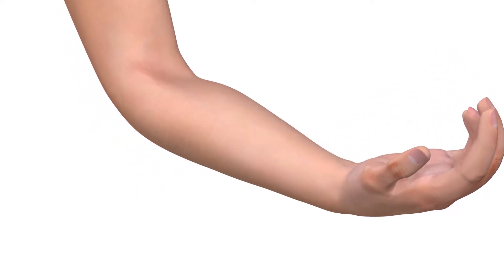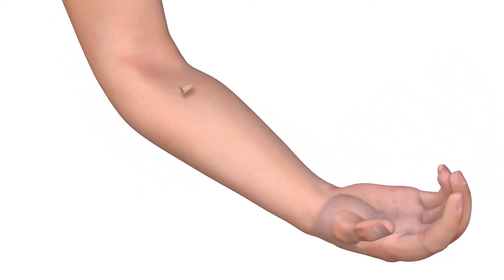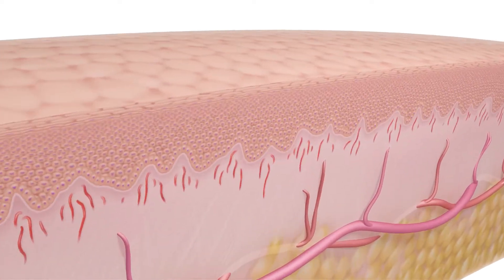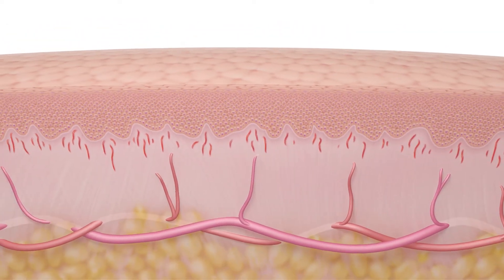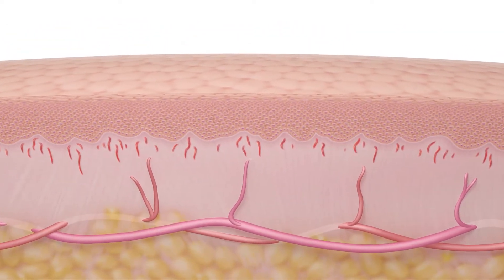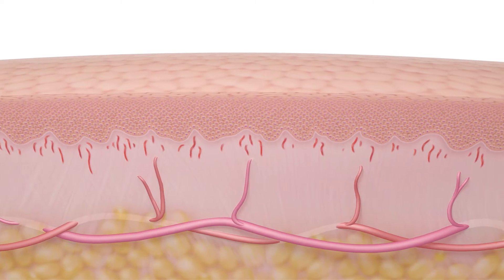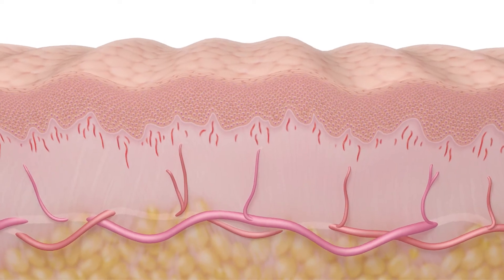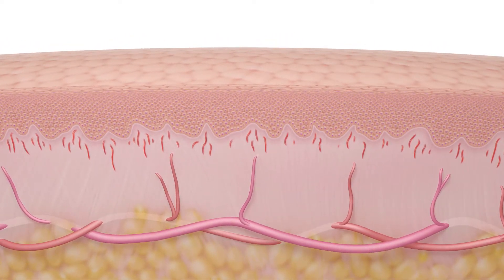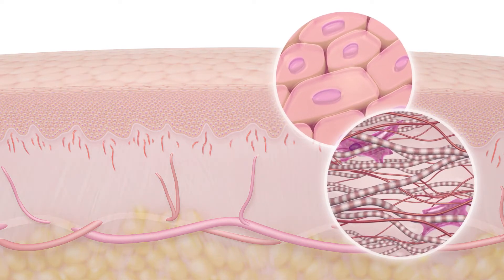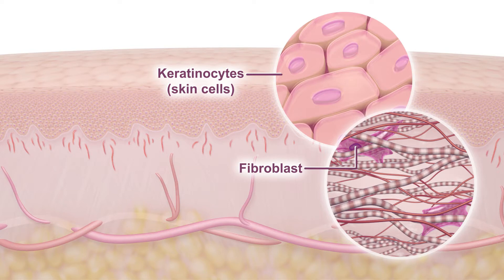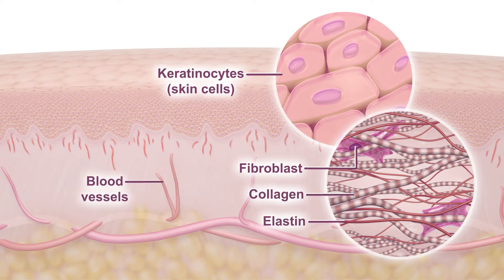Skin in its natural state is always under functional tension. Its viscoelastic properties allow it to react dynamically to movement and pressure. Microscopically, skin is a dynamic system including keratinocytes, fibroblasts, structural components including collagen and elastin, and blood vessels.